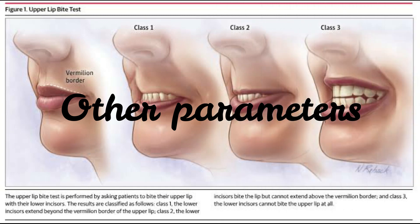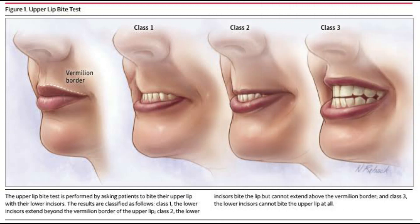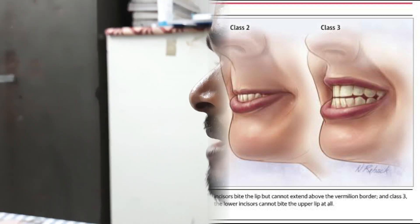Upper lip bite test is used to assess the range and freedom of mandible movement. Class 1: the lower incisor can bite the upper lip above the vermilion line. Class 2: the lower incisor can bite the upper lip below the vermilion line. Class 3: the lower incisor cannot bite the lip. The patient here belongs to Class 1.